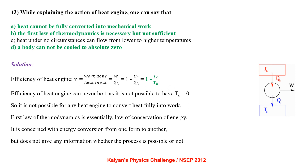While explaining the action of a heat engine: heat cannot be fully converted into mechanical work. The first law of thermodynamics is necessary but not sufficient. Efficiency η = W/Q_H = 1 − Q_C/Q_H = 1 − T_C/T_H. Efficiency can never be 1 since T_C cannot be 0. The first law concerns energy conservation but does not indicate if a process is possible. So options A, B and D are correct.